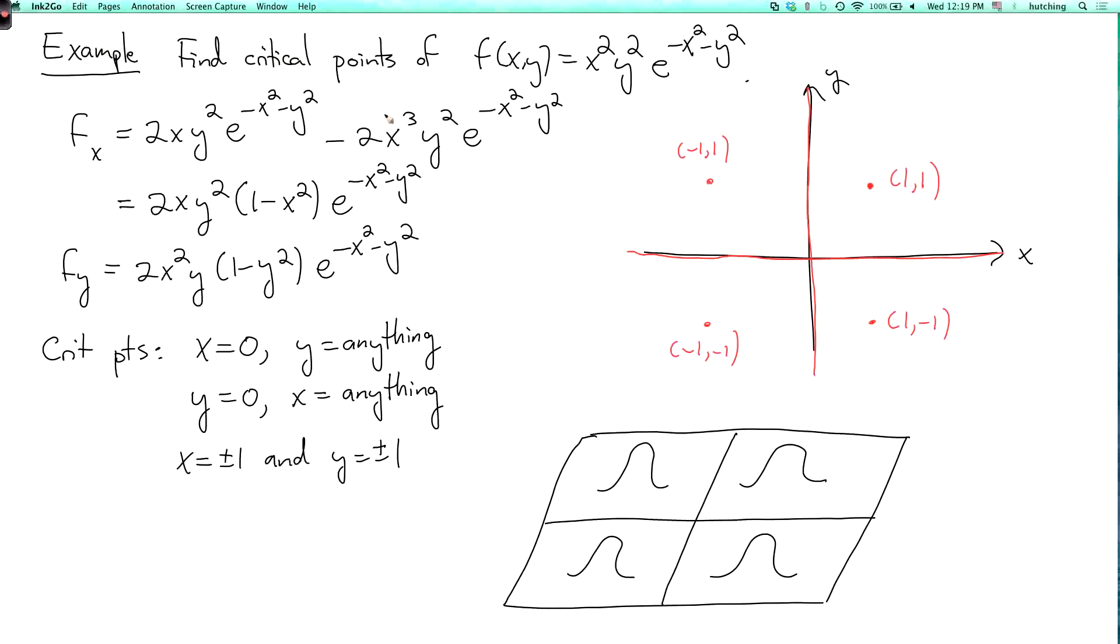So one can check that these points, well, actually we can just see this right away. So the axes, f is equal to zero, and everywhere else, f is positive. So these are global minima. We have a whole bunch of them. And with a little more work, you can check that these are global maxima. But I won't explain that right now. Anyway, this is just an example to show that the set of critical points can be quite complicated.